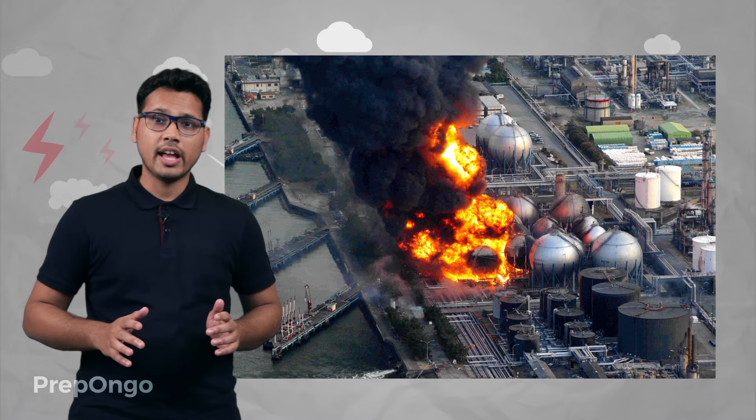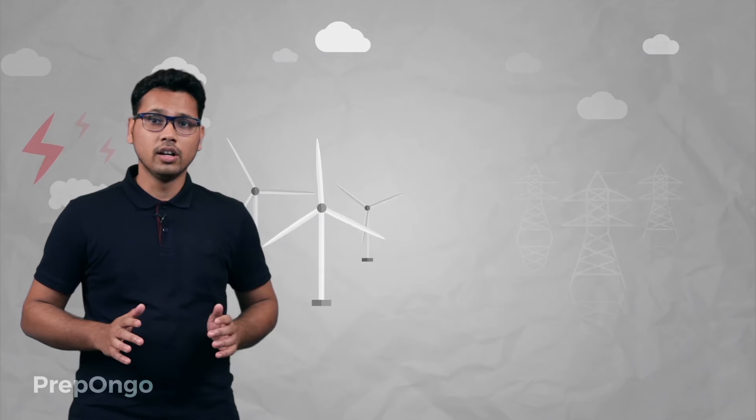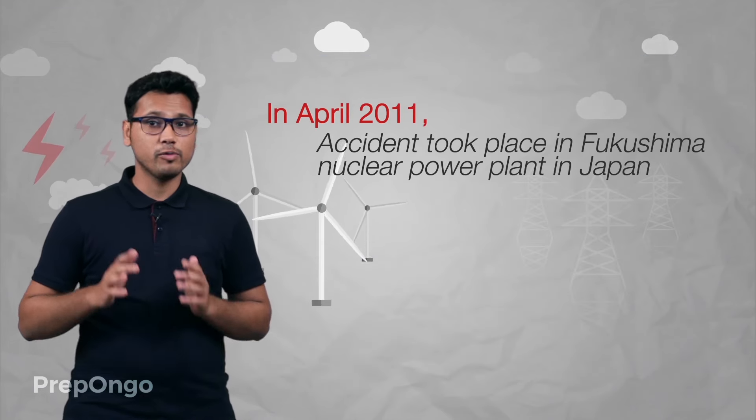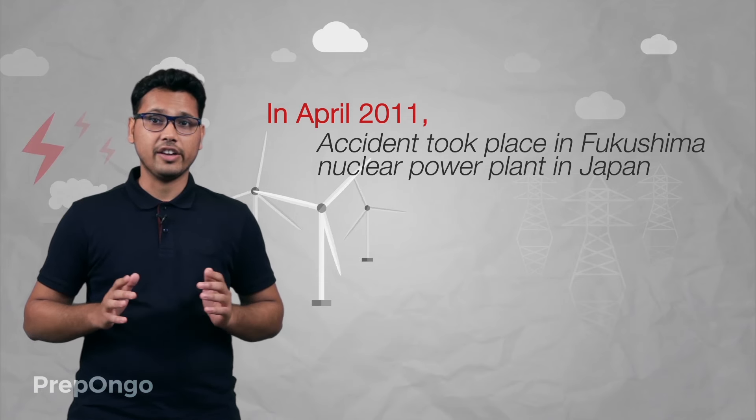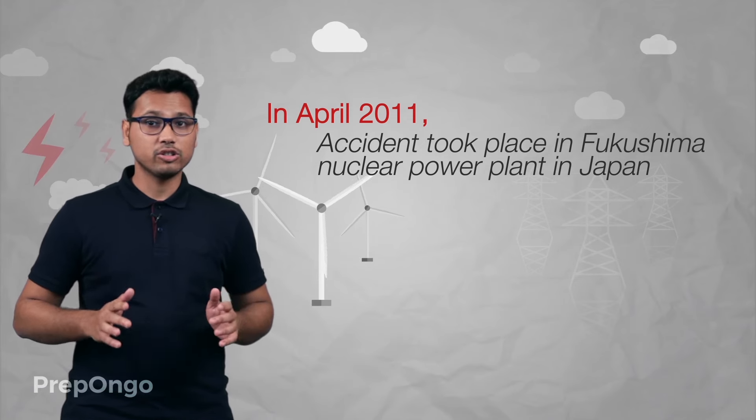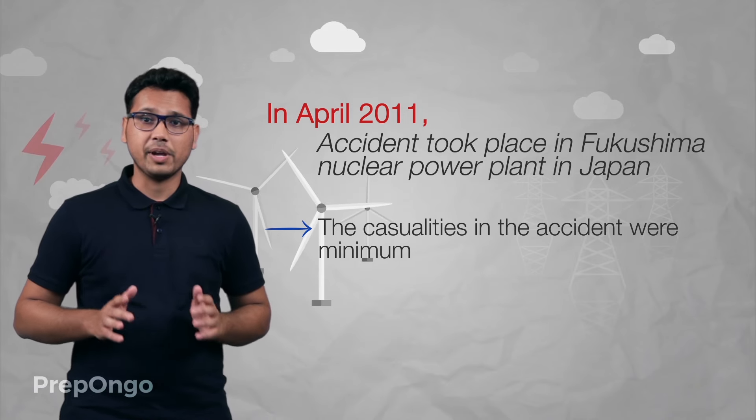Also, the nuclear power plant should be operated very safely as a slight error can result in explosion and spread out of radioactive nuclear waste into the surrounding. The recent nuclear power plant accident took place in Fukushima Daiichi in Japan in April 2011. The good thing about this accident was that the casualties were minimum.